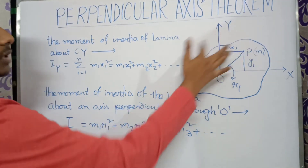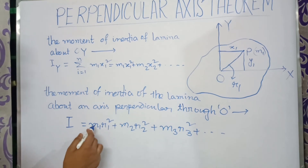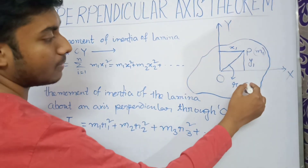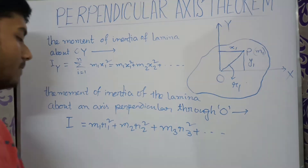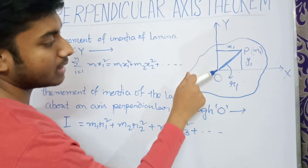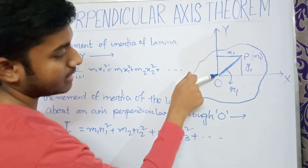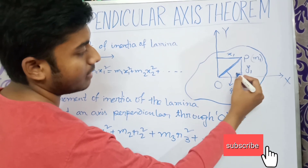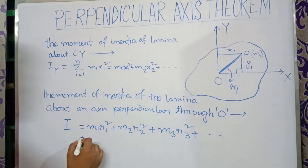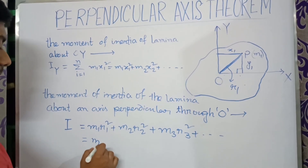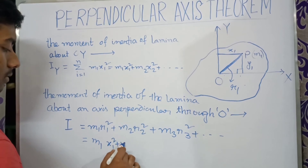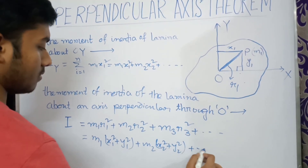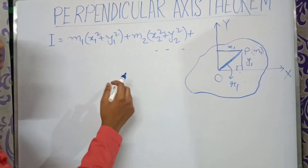For the whole lamina the moment of inertia will be equal to m1·r1² + m2·r2² + dot dot dot. From the figure you can see that r1² = x1² + y1², since the angle here is 90 degrees. So r1² = x1² + y1².